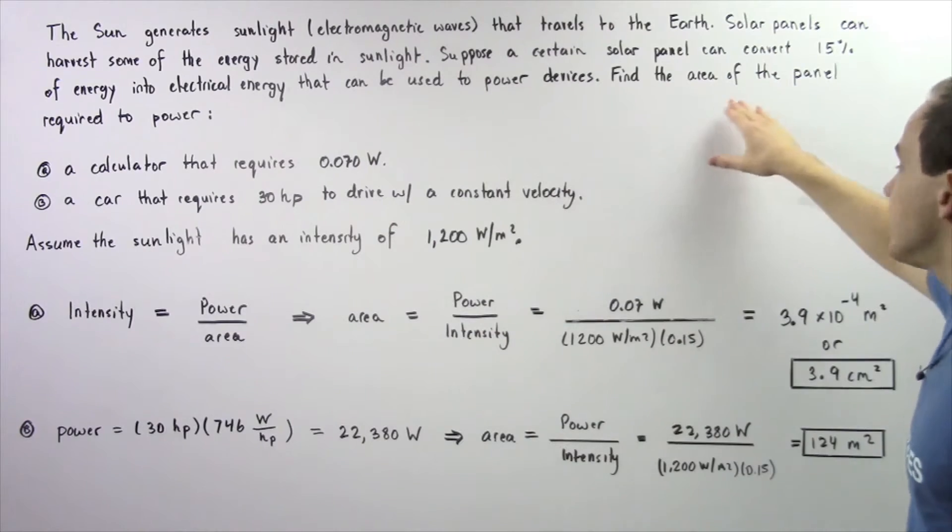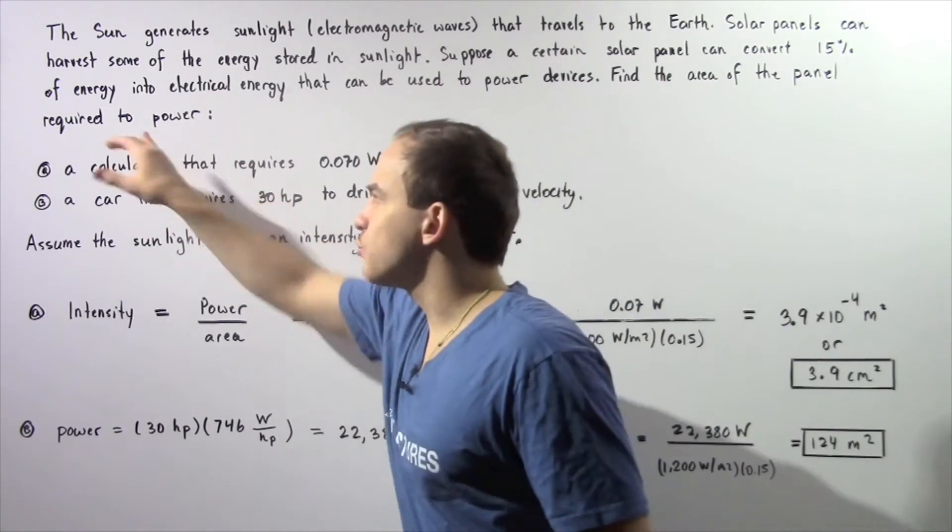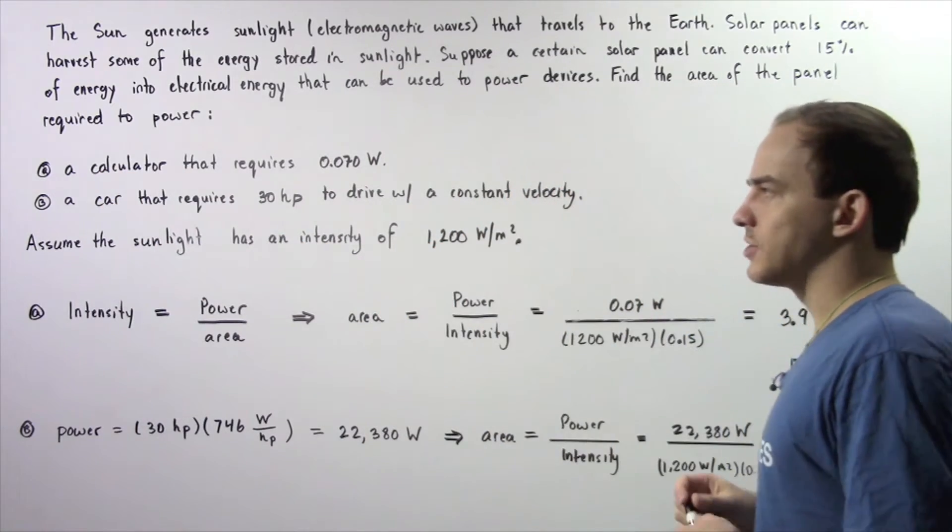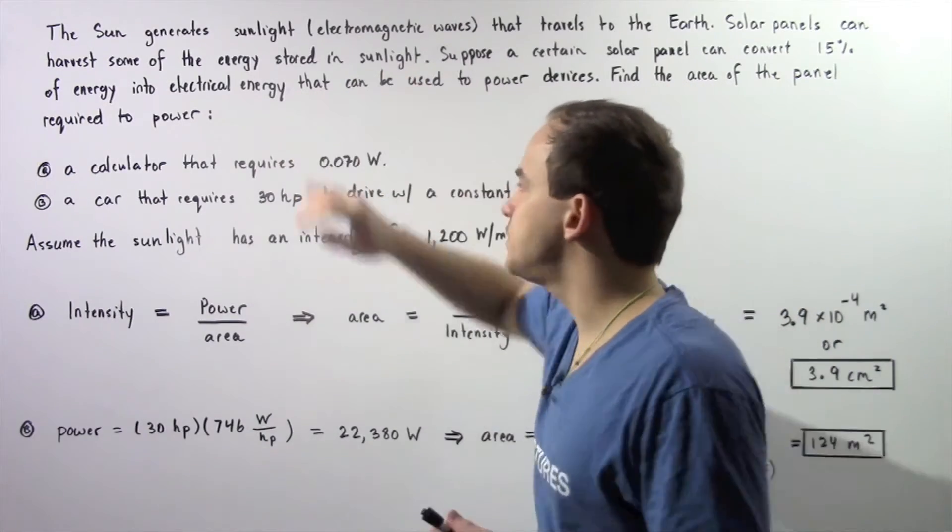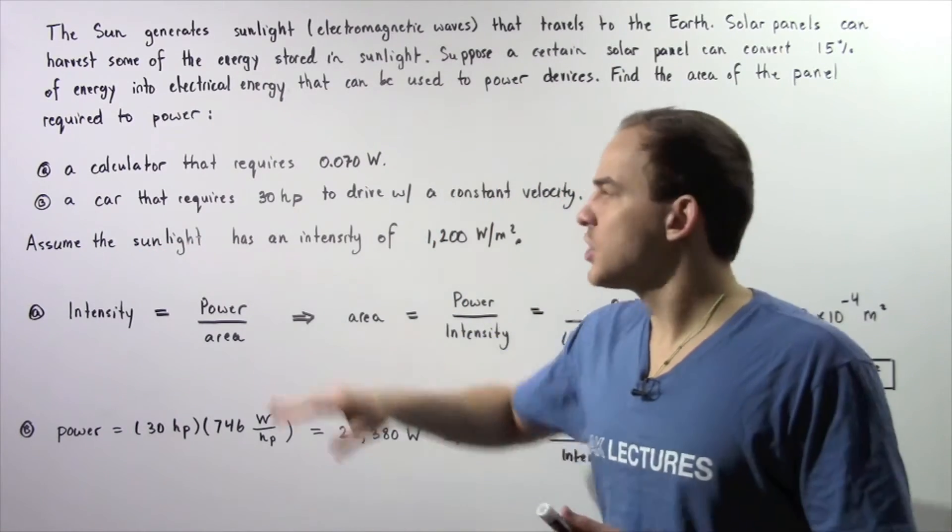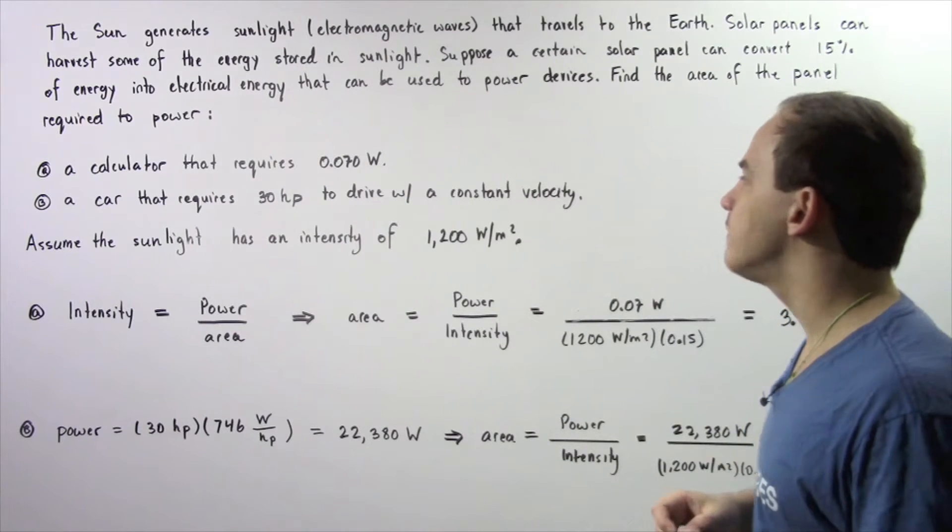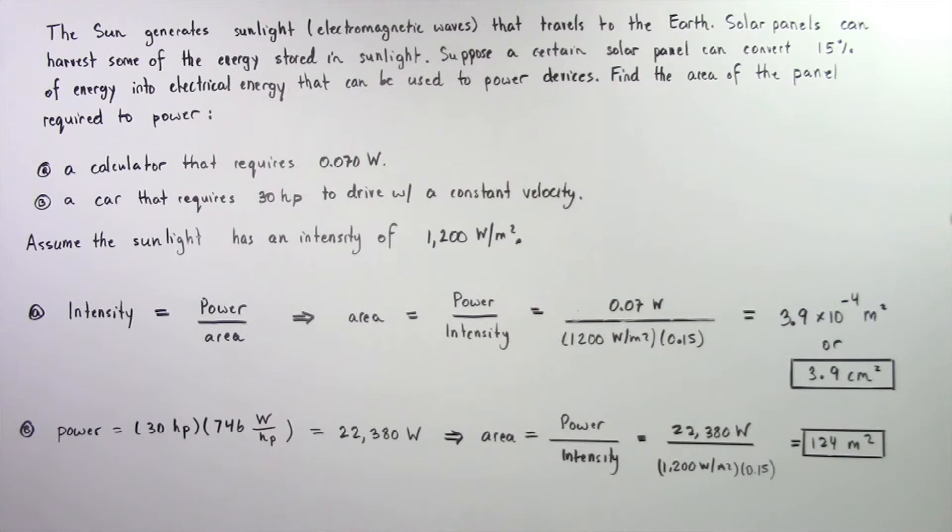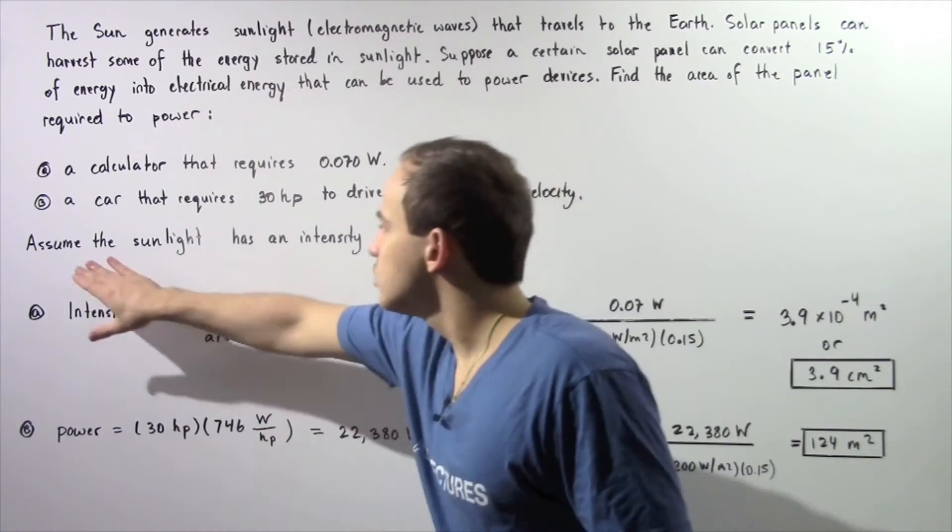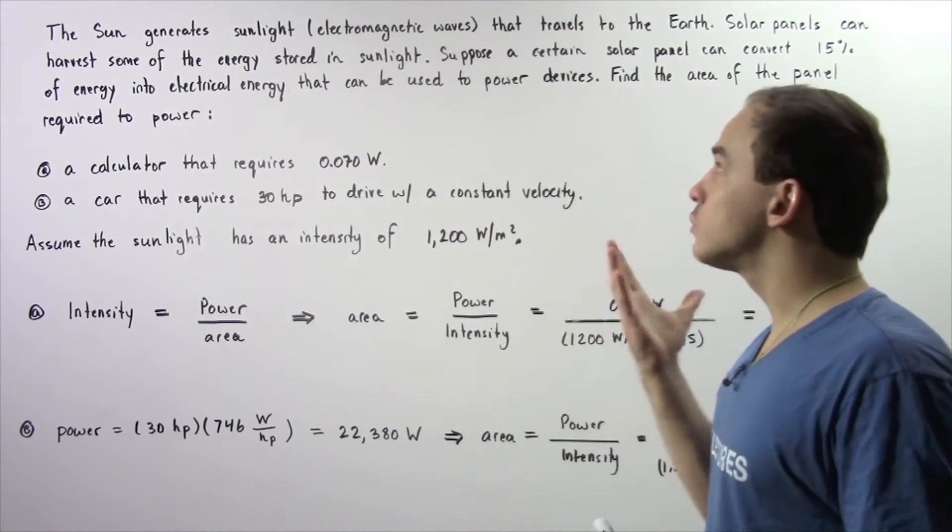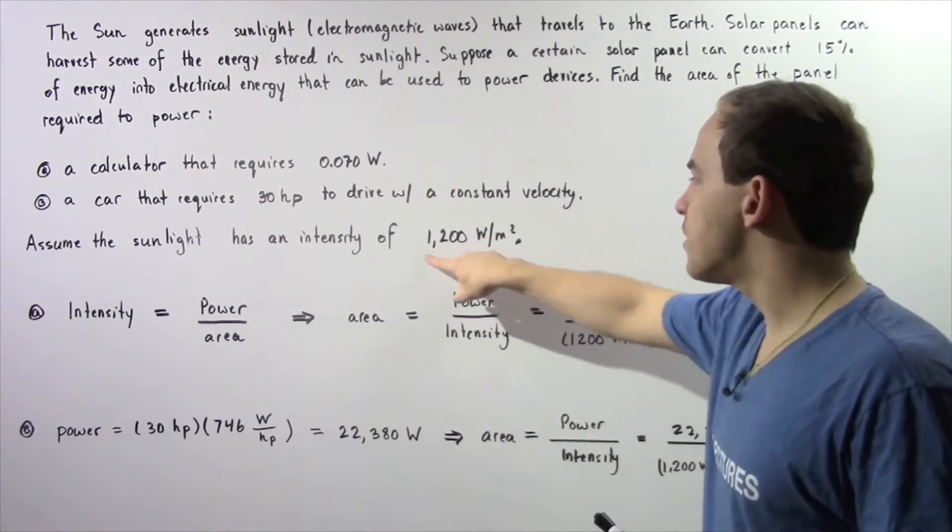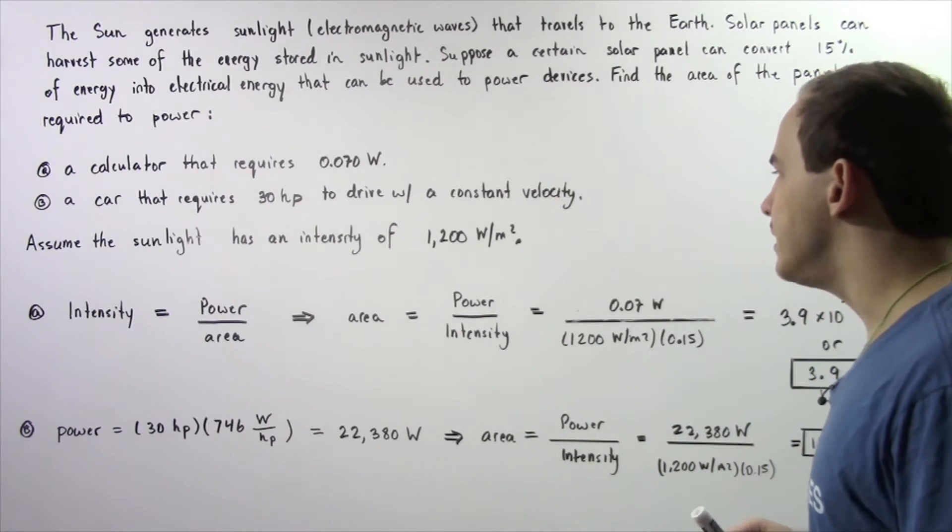We want to find the area of the solar panel that is required to power two devices. In part A, a calculator that requires a power of 0.07 watts, and in part B, a car that requires 30 horsepower to drive with a constant velocity on a highway. Assume that sunlight has an intensity of 1,200 watts per meter squared.